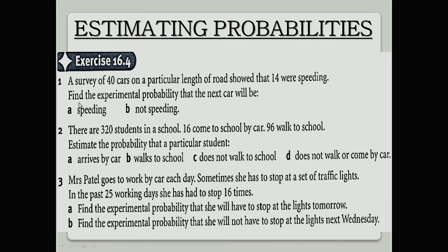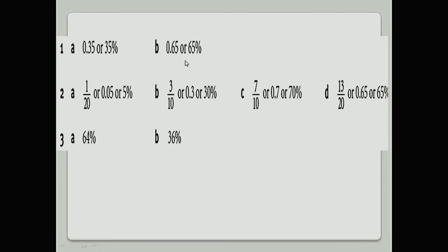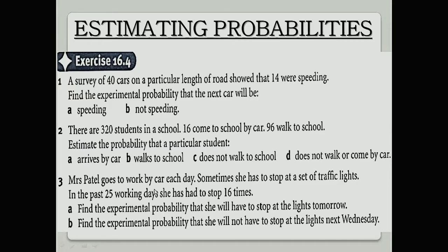For not speeding, 100 minus 0.35, you will get your answer, that is 0.65. The next question is the same, so let's read question number three.